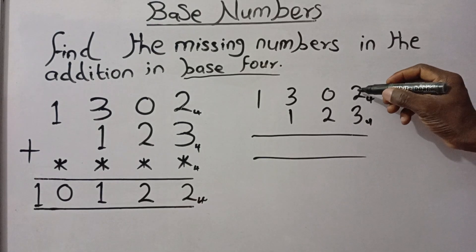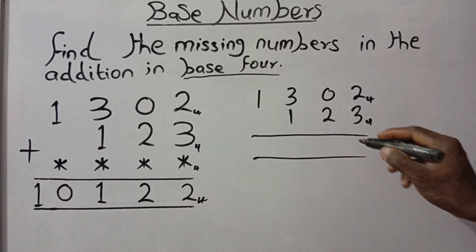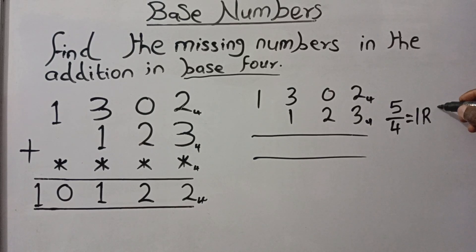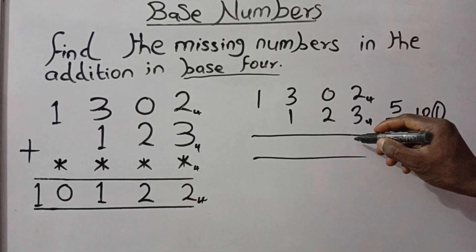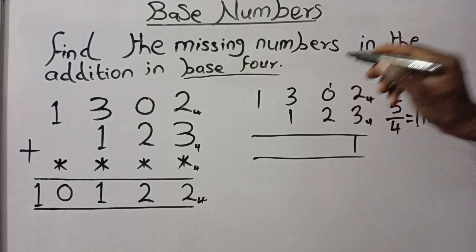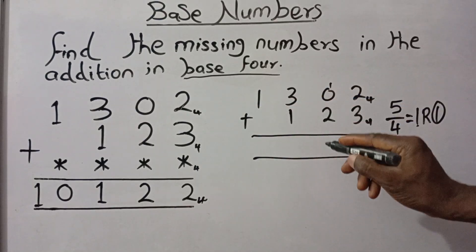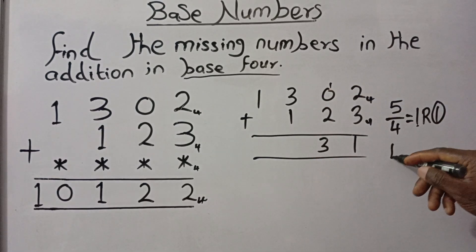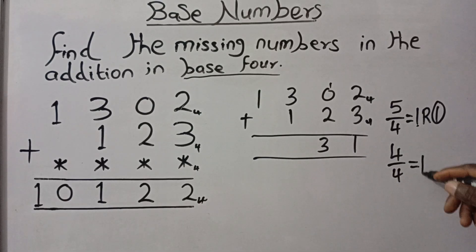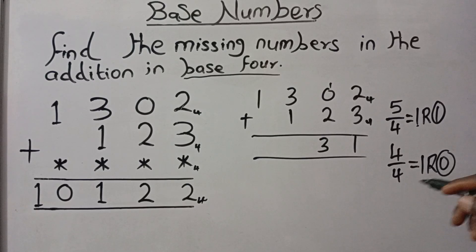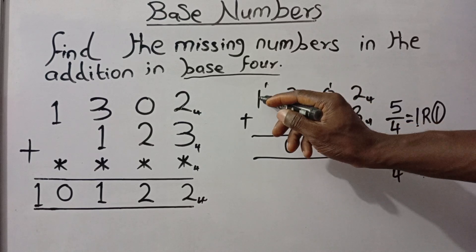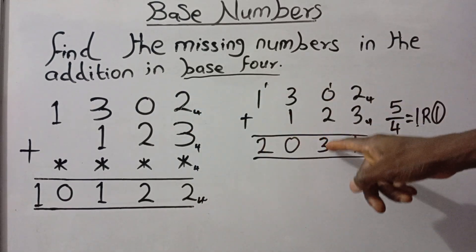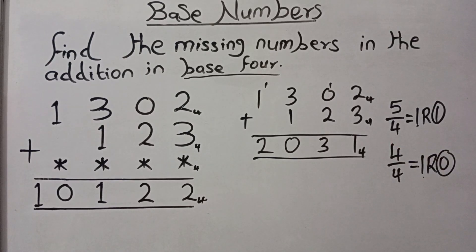Let's get started. 2 plus 3 gives 5, but we can't write 5 in base 4. We divide 5 by 4, which gives 1 remainder 1, so we write the remainder 1 and carry 1 to the next column. That's 1 plus 2 giving 3. Then 3 plus 1 gives 4, but we can't write 4 in base 4, so 4 divided by 4 gives 1 remainder 0 — write 0 and carry 1. Then 1 plus 1 gives 2, which we can write in base 4. So 1302 plus 123 in base 4 gives 2031 base 4.